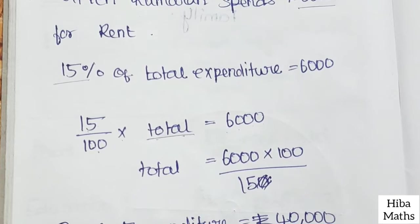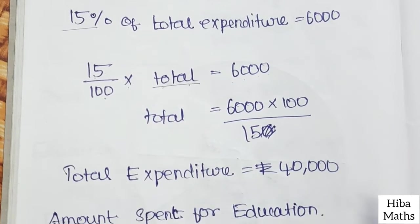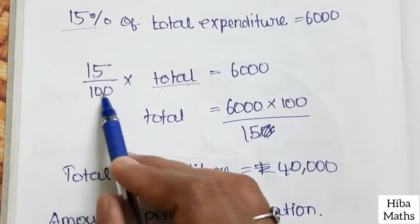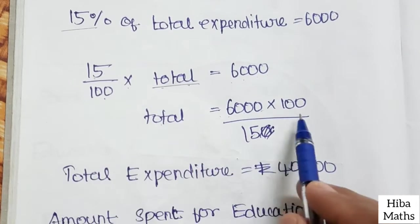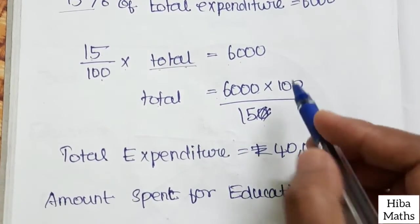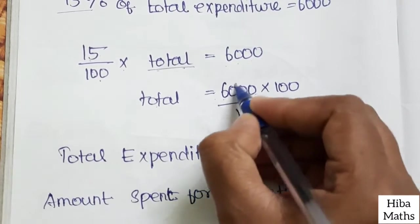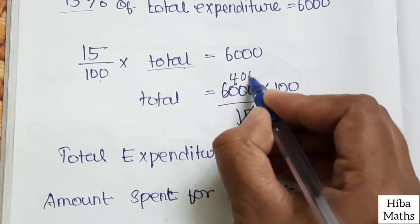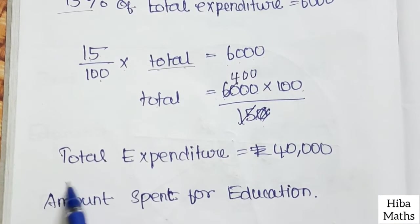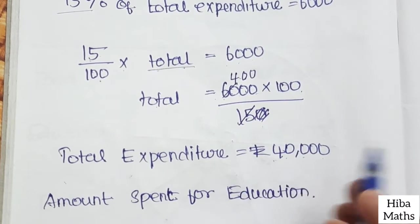From 15 divided by 100 into total equals 6,000, we get total equals 6,000 multiplied by 100 divided by 15, which gives total expenditure equal to Rs. 40,000.